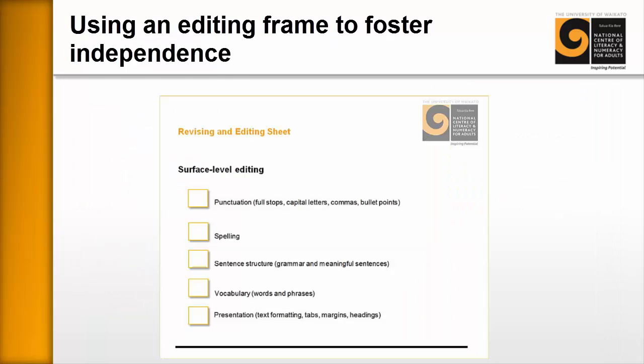In many cases, when tutors give feedback to learners, they'll take the learner's CV, sit down with a pen, work through it and make changes directly onto the CV, then give that CV back to the learner so they can see what changes need to be made. The way you would use a revising and editing sheet is to sit down with the CV and the editing sheet and note the type and number of errors that occur. For example, you might note that there are four punctuation errors, three spelling mistakes, and a number of sentence structure errors, vocabulary issues, and so on.